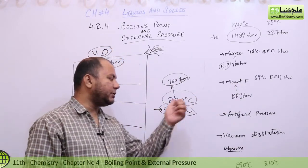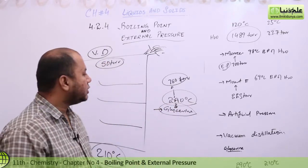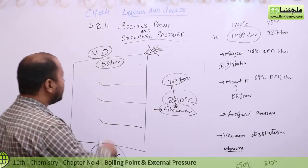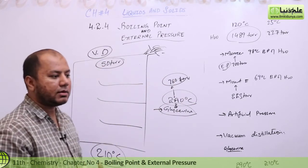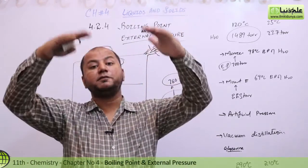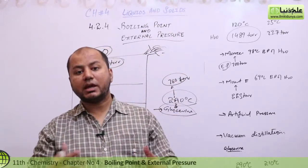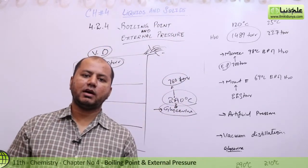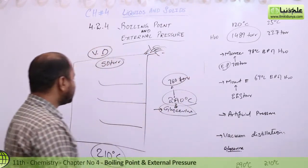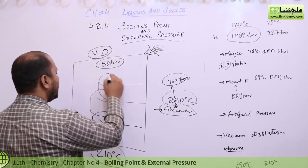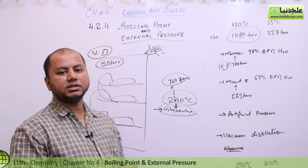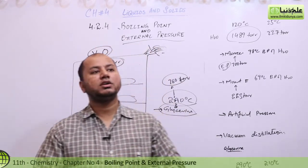Glycerine normally boils at 290 degrees, creating 760 torr pressure. But if we reduce external pressure to 50 torr, glycerine molecules at 210 degrees will create just 50 torr vapor pressure. So with external pressure set to 50 torr, glycerine boils at 210 degrees. The glycerine molecules evaporate and can be collected in a distillation chamber.